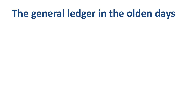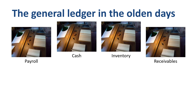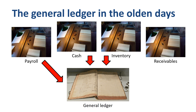Until the 1970s and 1980s, recording entries manually in big ledger books was the way to go. You would have separate subledger books, such as payroll, cash, inventory, receivables, and many others, depending on the type of company. From each of these subledger books, summary amounts would be transferred manually into a central place called the general ledger.